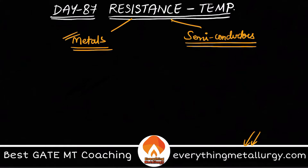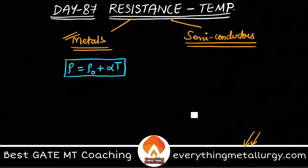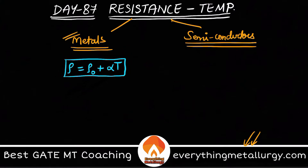First, let's discuss metals. In metals we have a mathematical expression for resistivity and temperature: ρ(T) = ρ₀ + αT, where ρ₀ and α are constants — ρ₀ is resistivity at a reference level, and α is a material constant. You can see that by increasing the temperature, ρ is also increasing, meaning resistivity is increasing.